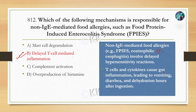T cells and cytokines cause gut inflammation leading to vomiting, diarrhea, and dehydration. These symptoms are generally seen in food allergies and may also be seen in food poisoning.